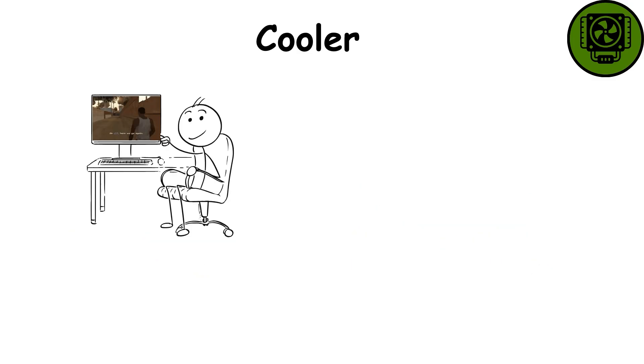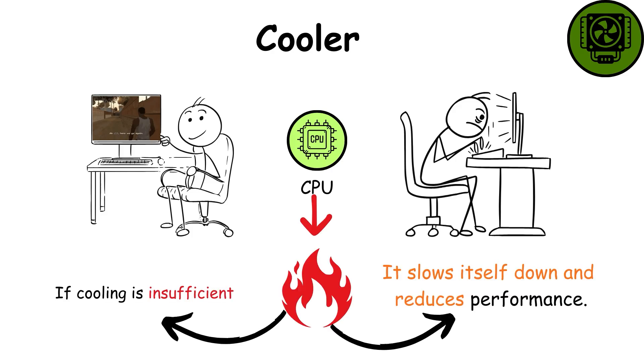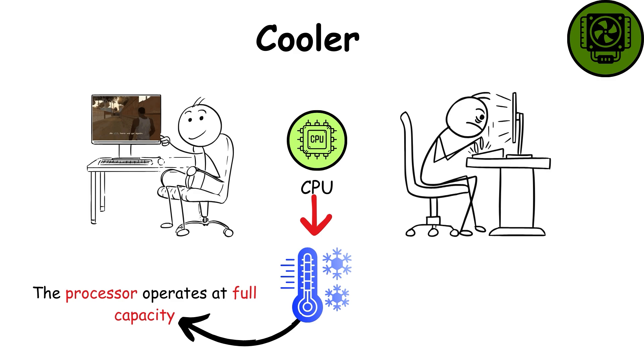For example, if you're gaming or rendering videos for hours, your CPU runs at maximum power and heats up. Without good cooling, it slows itself down to prevent damage. With efficient cooling, it runs at full speed, boosting performance and extending hardware lifespan.